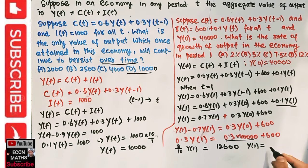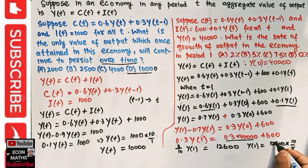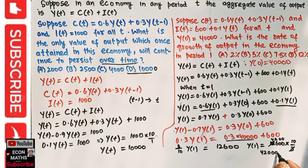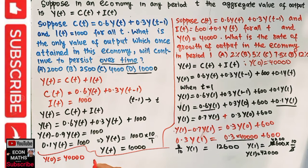Transposing: Y1 = 12,600 × (10/3). Since 12,600 is divisible by 3: 12,600 / 3 = 4,200, then 4,200 × 10 = 42,000. So output in period one is Y1 = 42,000. Initially our output was 40,000 and output in period one is 42,000.